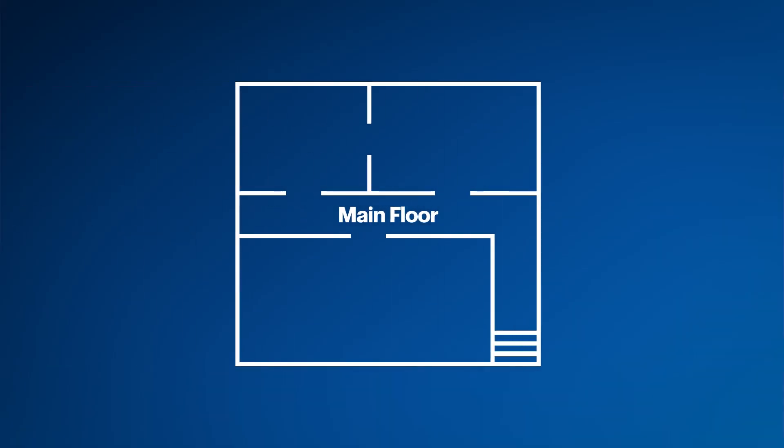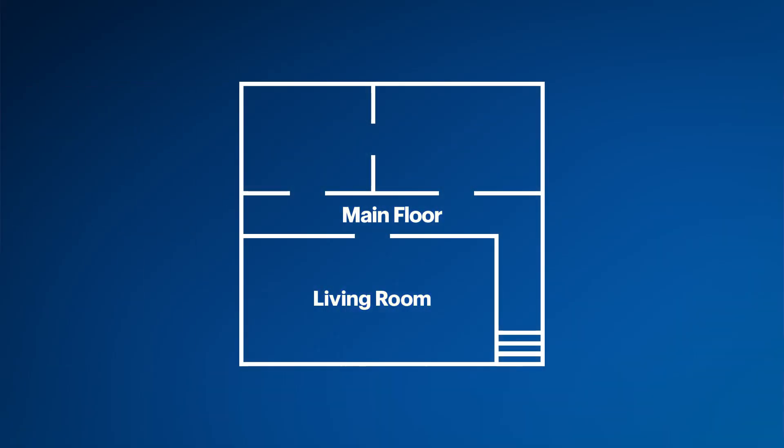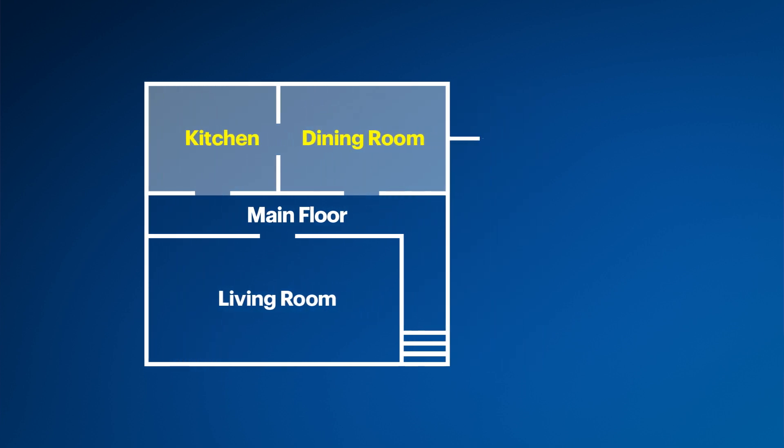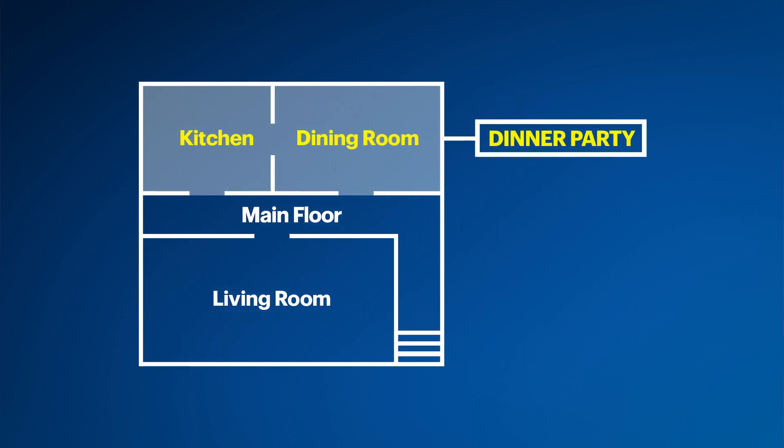Now you might be thinking, what if I really like this group? Is there a way I can easily choose it again? There is. Let me show you how to create custom groups. You might want to group by house level or section depending on your layout. For example, you might have kitchen and dining room together in a group called Dinner Party, or whatever makes the most sense in your situation.